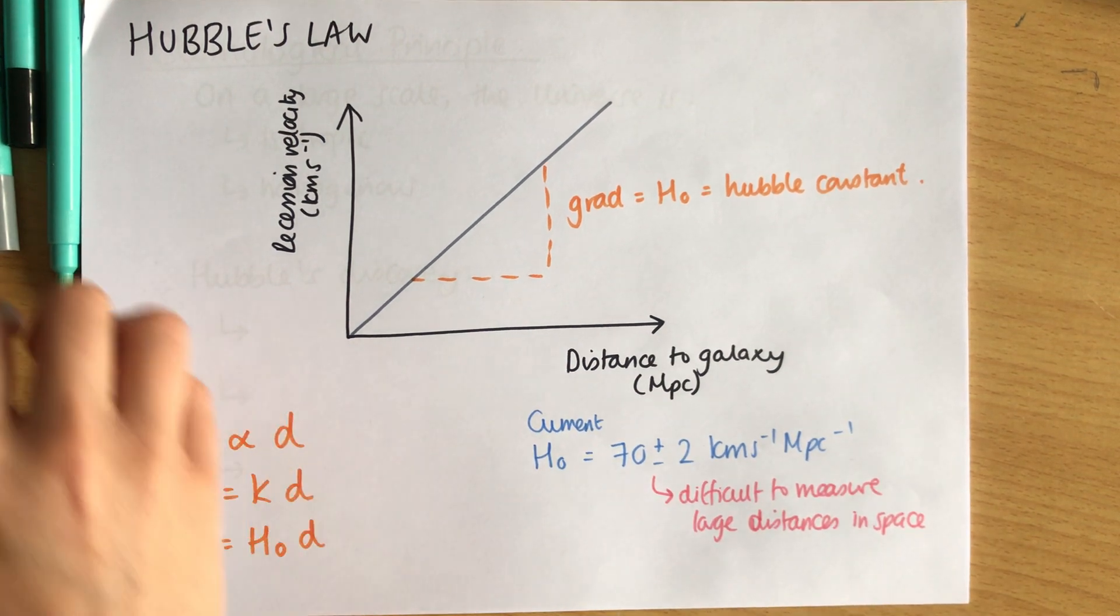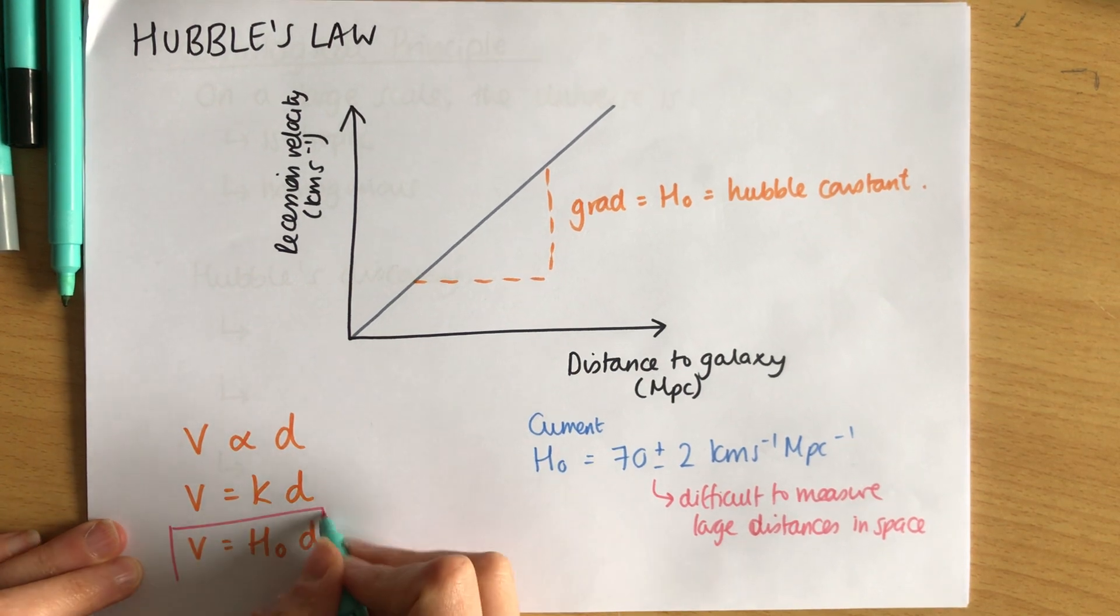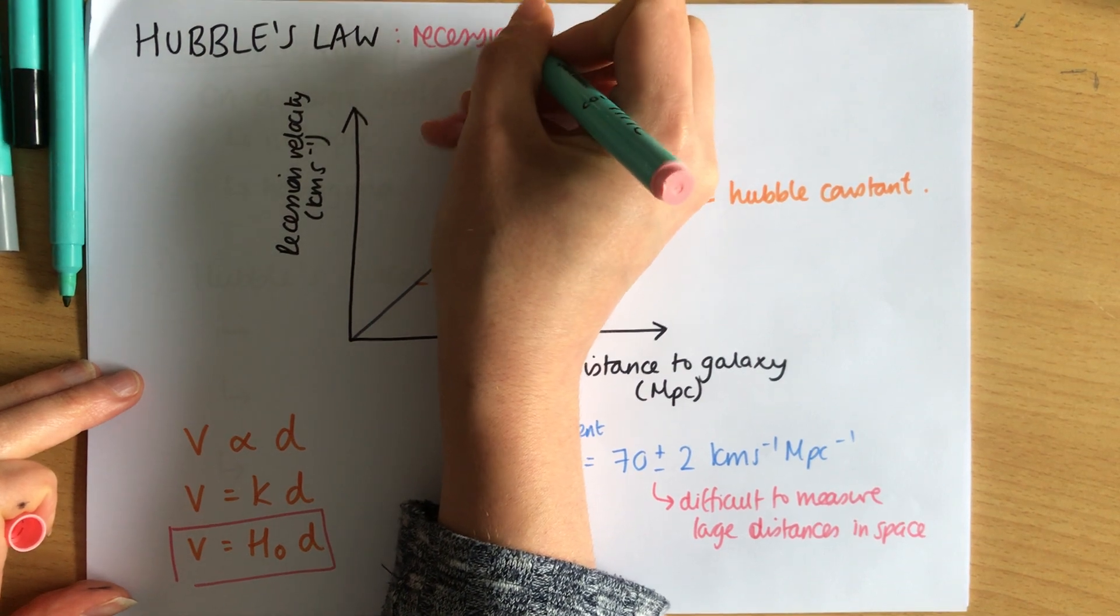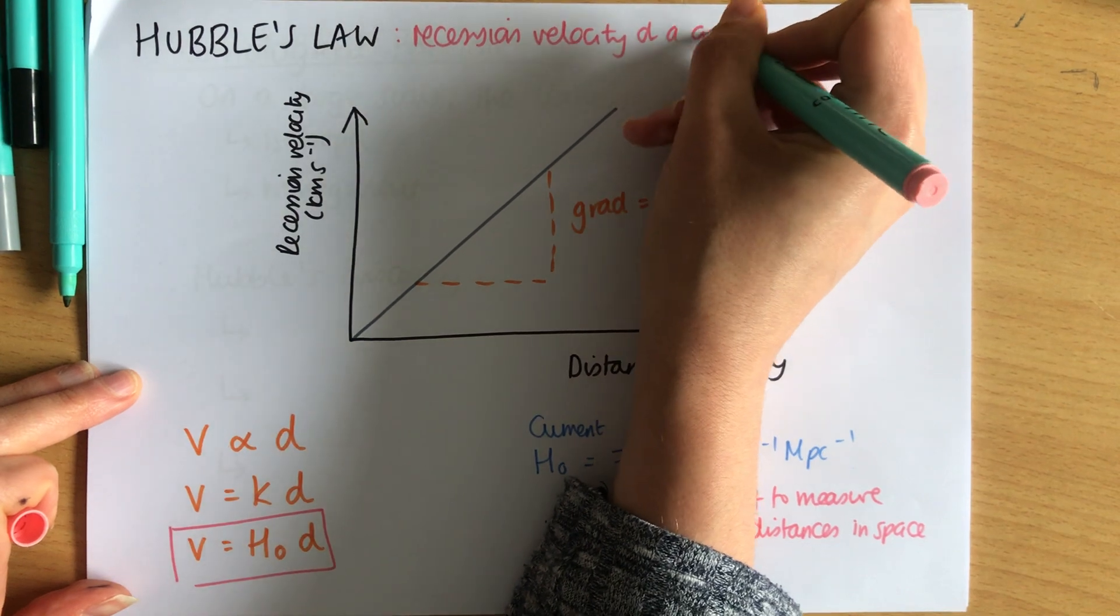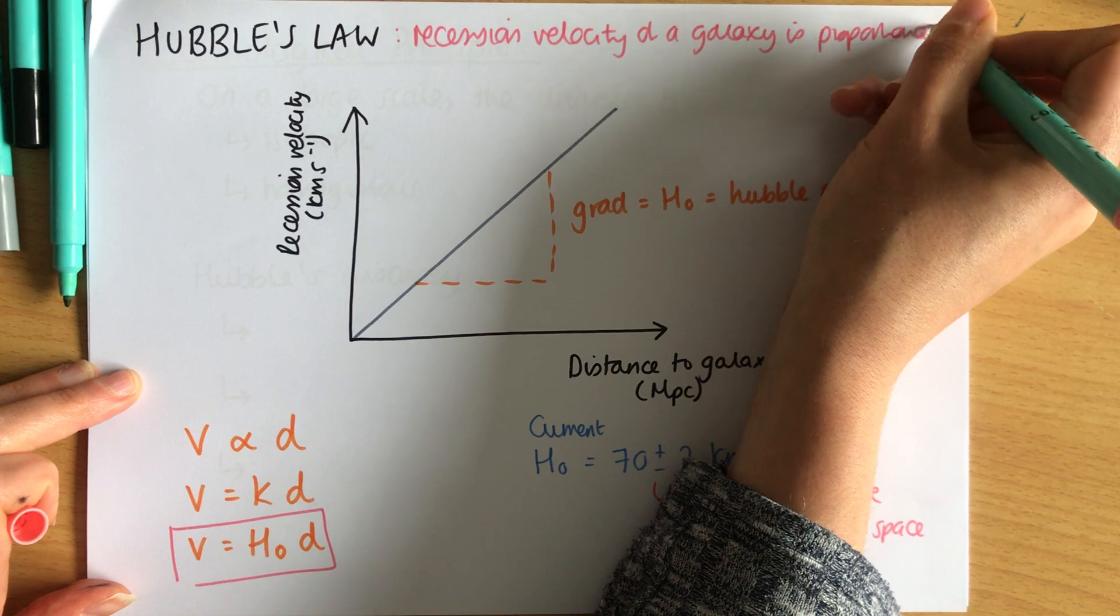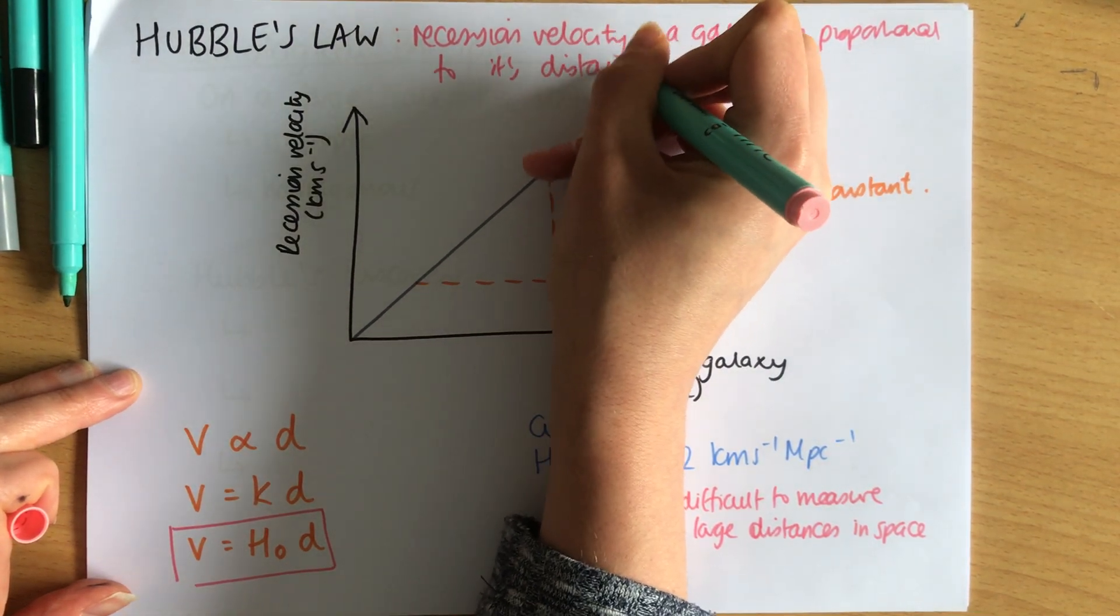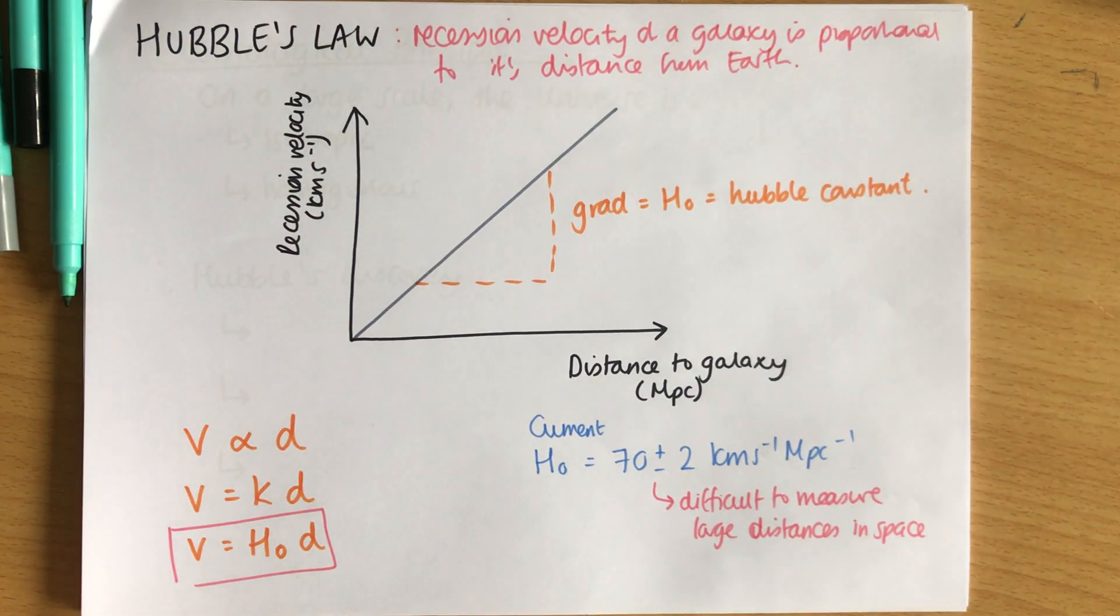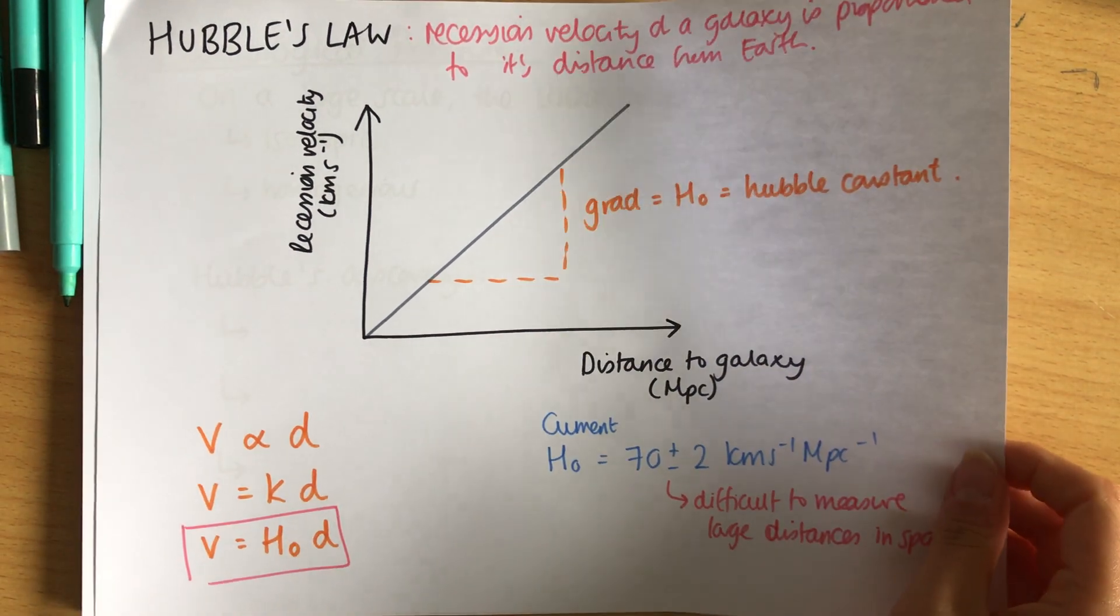Now, Hubble's law, just to kind of reiterate and make it really obvious, Hubble's law is this, but that tells us that the recession velocity of a galaxy is proportional to its distance and that leads us to quite an important finding.